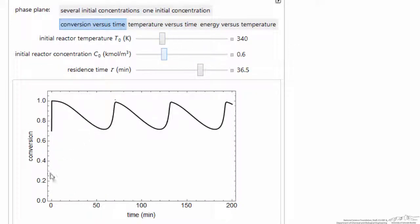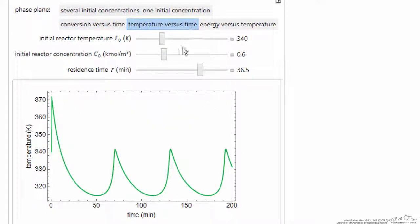now we can see the conversion. Conversion of one, of course, means the concentration reactant is essentially zero. So notice the oscillations now that continue forever. And likewise, there are temperature oscillations.